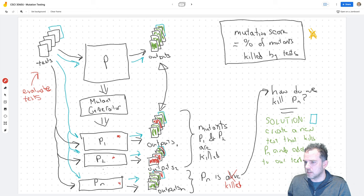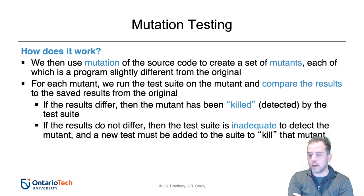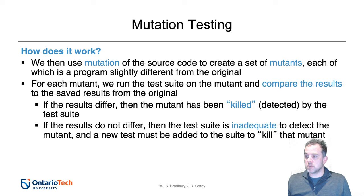Going back to the slides: we're trying to detect whether mutants are killed, and each mutant represents some syntactic fault. There are also equivalent mutants — where although the program has changed syntactically it behaves identically to the original, so you can't actually tell the difference — but for now let's assume we're looking at mutants that are all different. We want to kill as many as possible to gauge our test adequacy — how good our tests are at detecting the seeded faults.